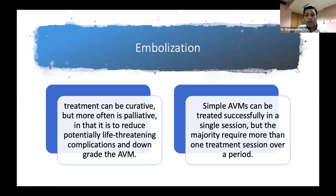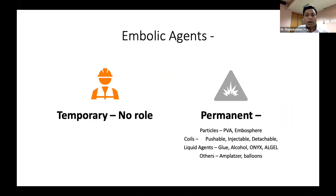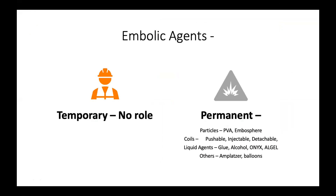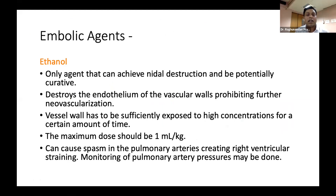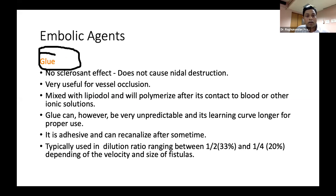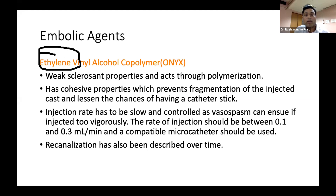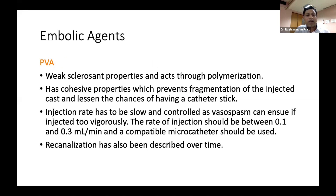Regarding embolic materials, there are two kinds — temporary and permanent. Temporary materials like gel foam have no role here; we need permanent embolic materials, which may be particles, coils, liquid, or embolic agents. Ethanol is the most destructive liquid embolic agent, but it is very difficult to control. In settings where it can be controlled, it is the best embolic material. Glue or Onyx can also be used — Onyx has slower polymerization, giving better control for large lesions with many feeders. PVA may sometimes also be required.